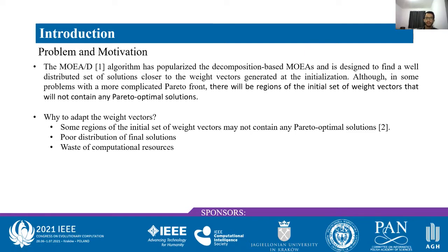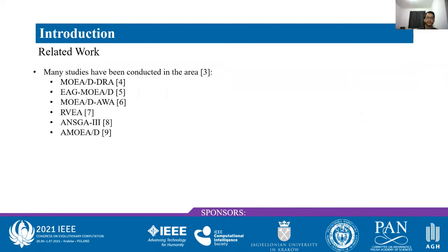Some regions of the initial set of weight vectors may not contain any Pareto solutions, and in the evolution process the set of solutions may not be well-distributed. Some cases may have an accumulation of solutions at the edges of the Pareto front and also waste of computational resources. In the area of reallocating weight vectors, many studies have been conducted: some change the weights at random, others utilize information from the current or archived population, and many others mix two or more of these approaches.